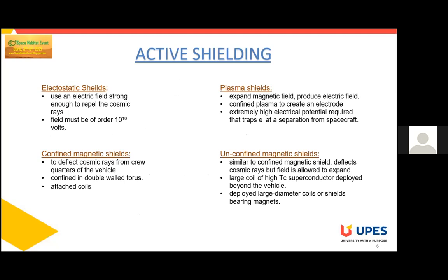Active shielding is of four types. First, electrostatic shields use an electric field strong enough to repel cosmic rays, and must be on the order of 10 to the power of 10 volts. Second, plasma shields expand a magnetic field to produce an electric field and confine plasma to create an electrode, requiring extremely high electrical potential that traps electrons at a separation from the spacecraft.